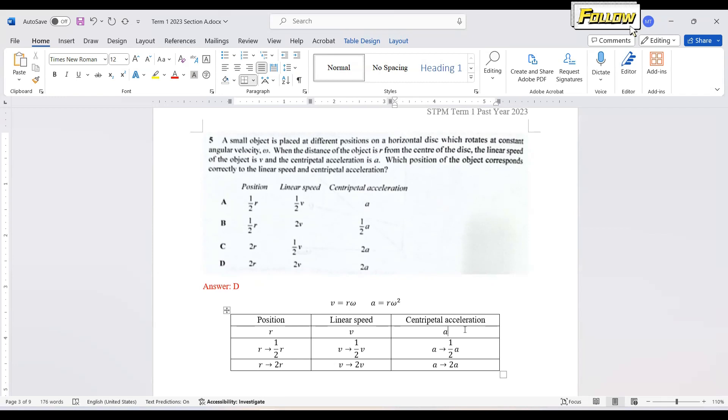This question is talking about the relationship between R and V and also A. If we refer to the formula of the linear speed V equal to R omega and also the centripetal acceleration R omega squared, we can see that V and A is directly proportional to R. There are two types of cases where the first A and B, the R is half. And for C and D, the R is double. So when R is half, V should be half, A should be half also. And when R is double, V is double, A is also double because they are directly proportional. So the answer should be D where we have 2R is 2V and 2A.